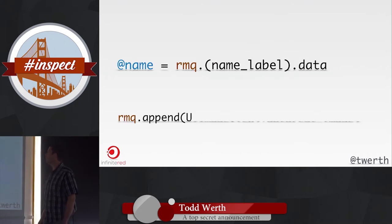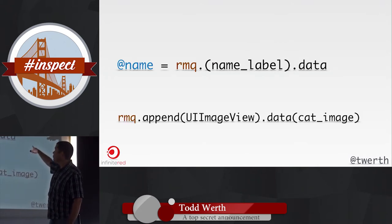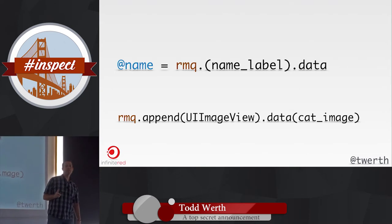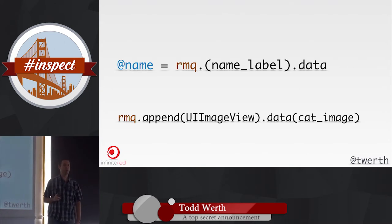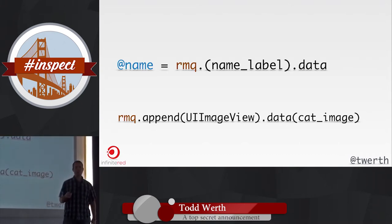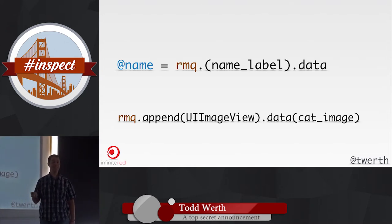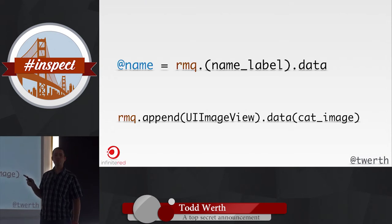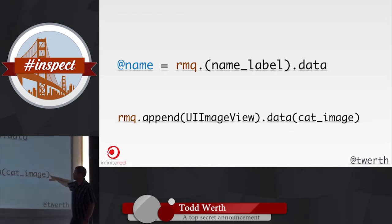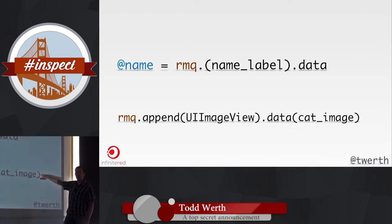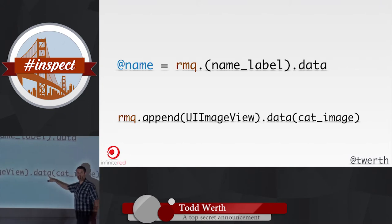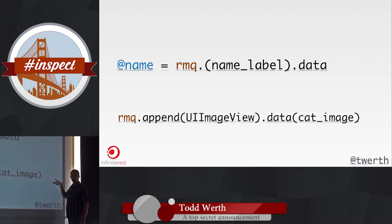Data — this is a small feature. You can call 'data' to get the data of whatever view it is, or set the data. It sets and gets the most common data for that particular view — for a UILabel it's text, for a UIButton it's the title for whatever state, for an image view it's the image, for a text view it's text. The reason we want this is for chaining — you can set the image and continue the chain, because RMQ chains: every time you do something in RMQ it returns an RMQ object, just like jQuery.